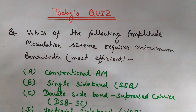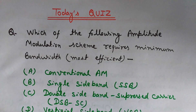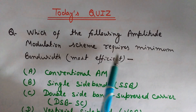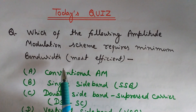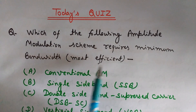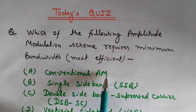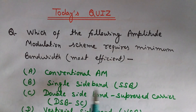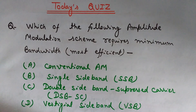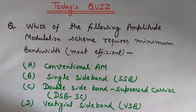Before we start, here is today's quiz related to this video: which of the following amplitude modulation schemes requires minimum bandwidth — that is, which is most efficient? Option A is conventional AM, option B is single sideband (SSB), option C is double sideband suppressed carrier, or option D is vestigial sideband (VSB). Please write your answers in the comment section.